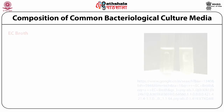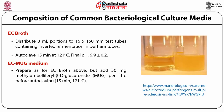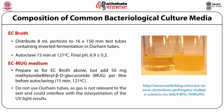The EC MUG medium is prepared similarly to EC broth but with the addition of 50 mg of 4-methylumbelliferyl beta-D-glucuronide (MUG) per litre before autoclaving for 15 minutes at 121°C. Durham tubes should not be used as gas production is not relevant to the test and could interfere with interpretation of UV light results.